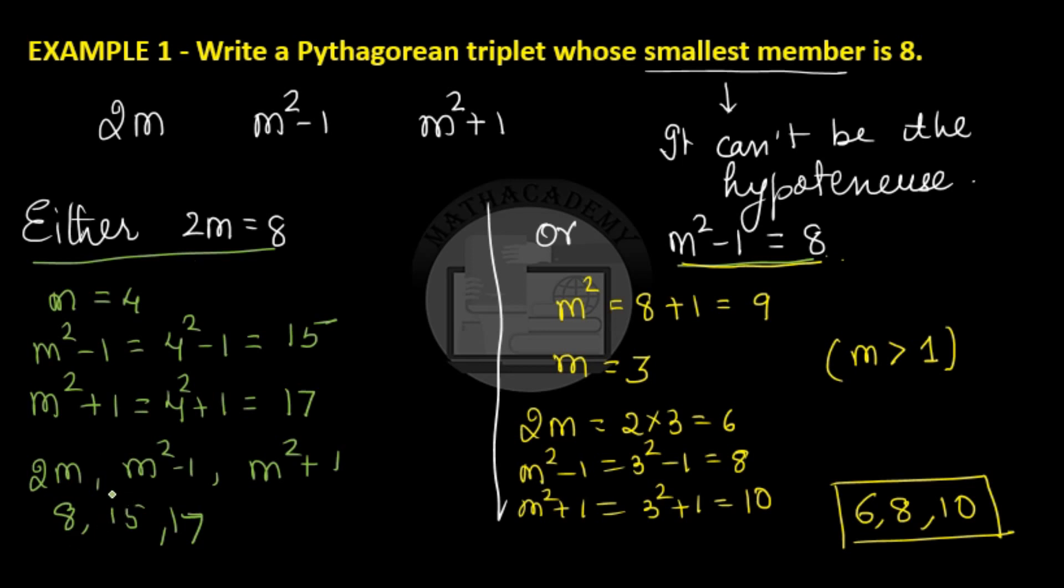Let us see which of the Pythagorean triplets satisfies that condition. If we look at this Pythagorean triplet, 8 is not the smallest member and hence we discard this Pythagorean triplet. And if we look at this Pythagorean triplet, 8 is the smallest member and hence the required Pythagorean triplet is 8, 15 and 17.